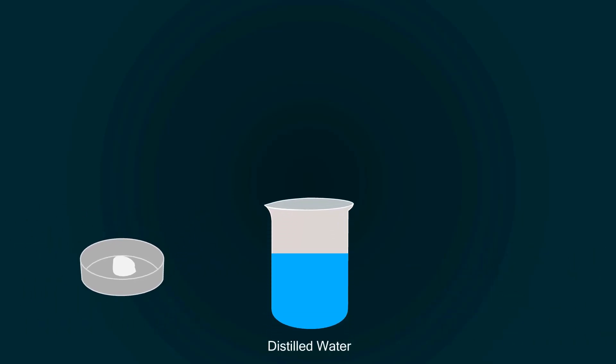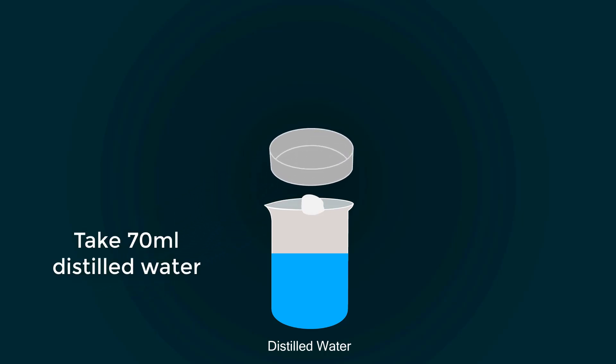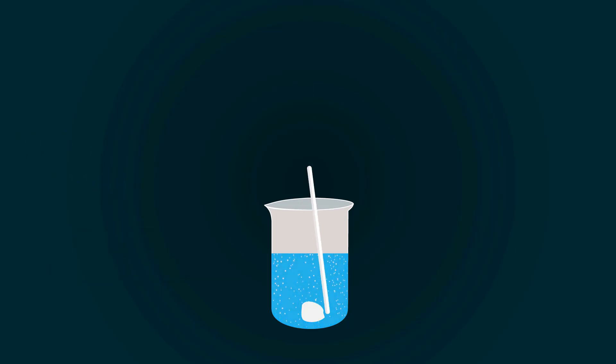Now add the potassium hydroxide into the distilled water. You can take distilled water up to 70 milliliters for mixing. You have to make a homogeneous mixture.